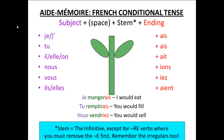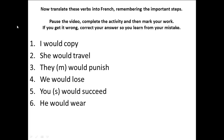Here we see the aide-mémoire for the French conditional tense again. This is the 'I would' form — the subject pronoun, then the stem and the ending, with a reminder underneath as to what we need to do to create the stem. Now translate these verbs into French, remembering the important steps. Pause the video, complete the activity and then mark your work. If you get it wrong, correct your answer so you learn from your mistake. For example, number one: 'I would copy' — je copierai.